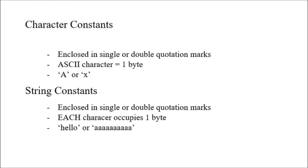Welcome back. Today we'll be learning about character constants and string constants. A character constant is basically just a character, represented by enclosing the character in single or double quotations. These are usually represented in ASCII — one ASCII character is equal to one byte. For example, you can represent the big letter A as 'A' in apostrophes, or in double quotation marks.